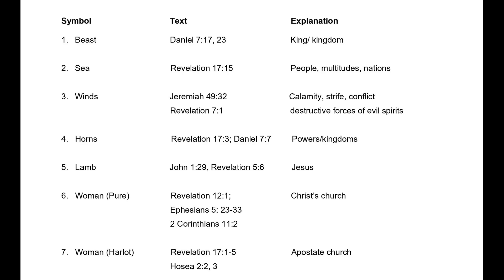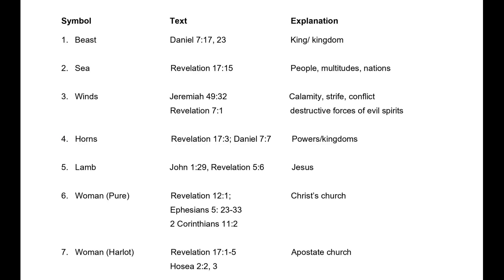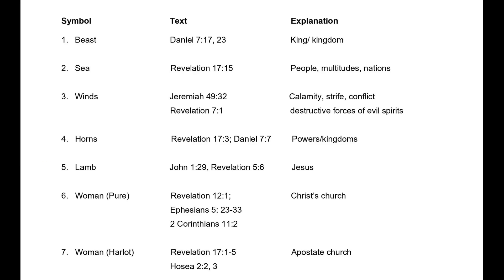One of the things I have done in my studies is to identify 25 major symbols in the book of Revelation and give their biblical meaning. For example, you have the idea of the dragon. What does that represent? According to Revelation 12 verses 7 and 9, the dragon represents the devil. You have a lamb in the book of Revelation — a lamb represents Jesus.